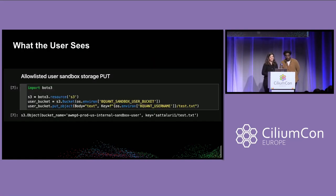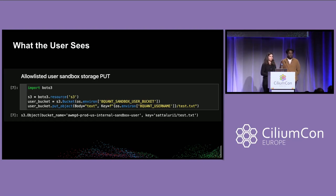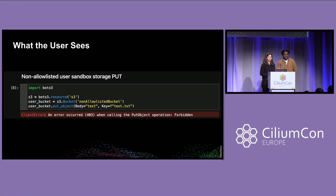There's a lot going on behind the scenes, but what the user ends up seeing is actually quite simple. If the user is going to try to export protected data to one of their sandbox buckets, it'll work. But if the user tries to export that same protected data to any other S3 bucket, they're going to hit a 403 forbidden. From their perspective, it's that simple.